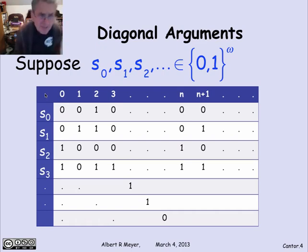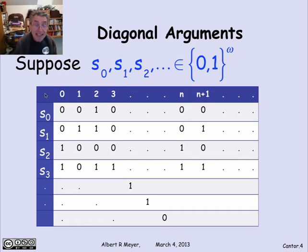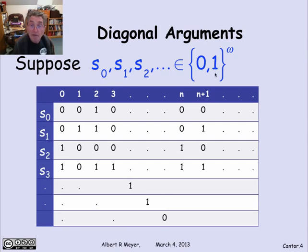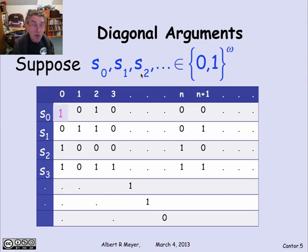The trick is to try to find an infinite binary sequence that is not in this list — one that differs from every row. If I can do that, then I've shown that any attempt to enumerate all of the binary sequences in {0,1}^ω is missing something, which means you can't really list it. How do you find a sequence that's not here? It's pretty easy.